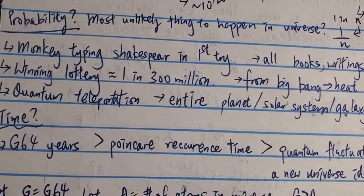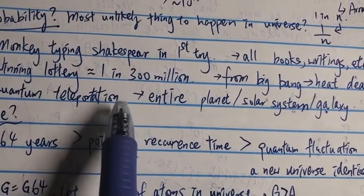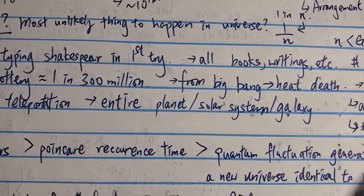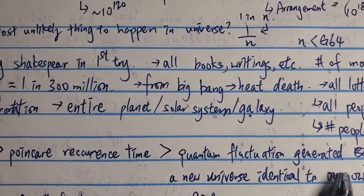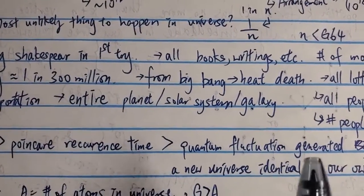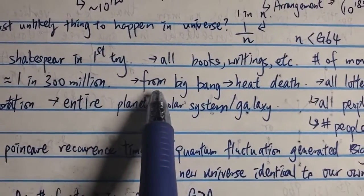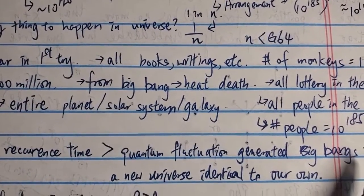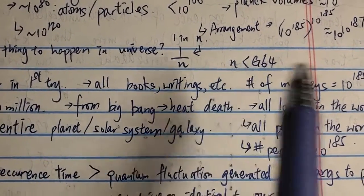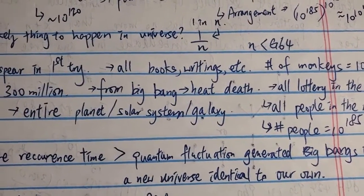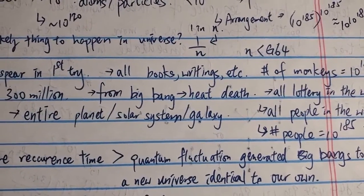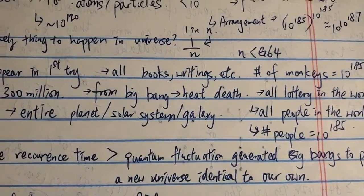What about winning the lottery? The Powerball has a chance of 1 in 300 million, so n is 300 million — way smaller than Graham's number. What about winning not just one lottery, but every single lottery, maybe once or twice a week, from the big bang all the way to the heat death of the universe? That n — the probability — is still smaller than g64. So we're talking about winning every single one twice a week from the big bang all the way to the heat death. What's the chance of that? That's a crazy small probability.